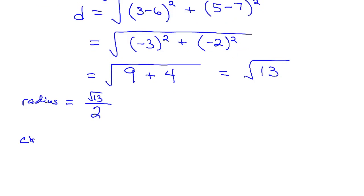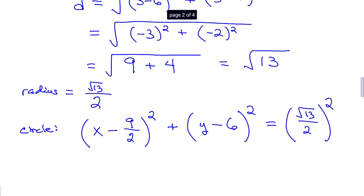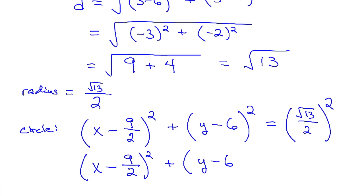Finally, to write the equation of the circle, we have x minus 9 halves quantity squared plus y minus 6 quantity squared equals the square root of 13 over 2 squared. Simplifying the right side gives us x minus 9 over 2 squared plus y minus 6 squared equals 13 over 4.